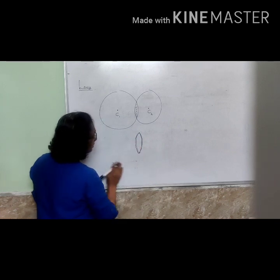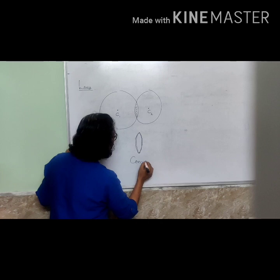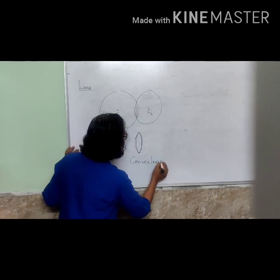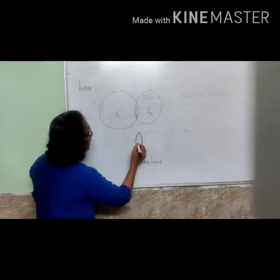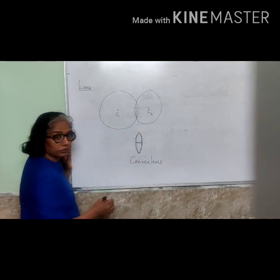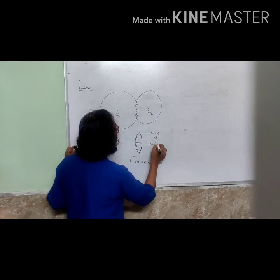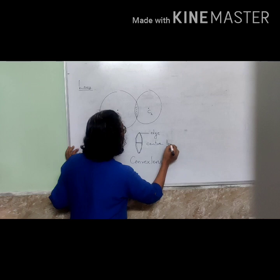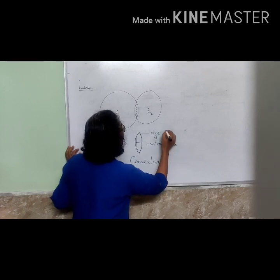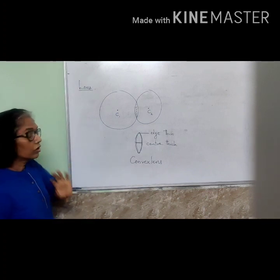In general, we call it a convex lens. What is the peculiarity of this? At the middle it is thicker, at the edge it is thinner. This is the edge and this is the center — thick over here and thin over here.